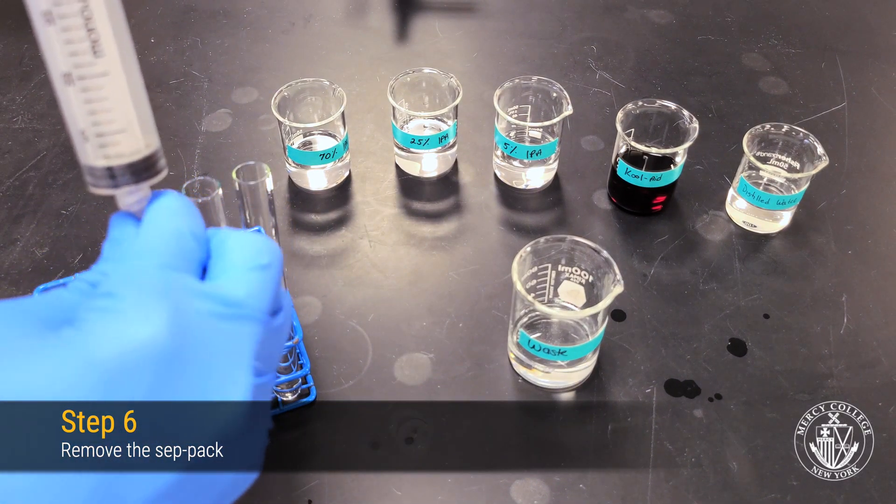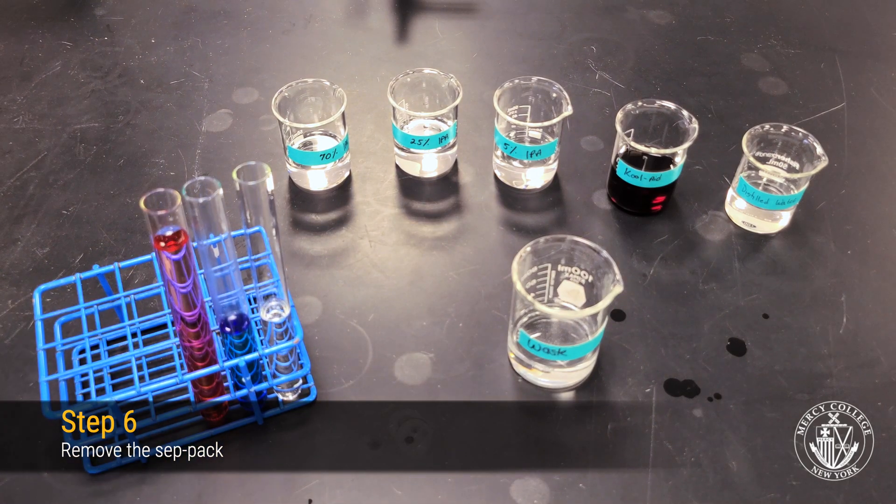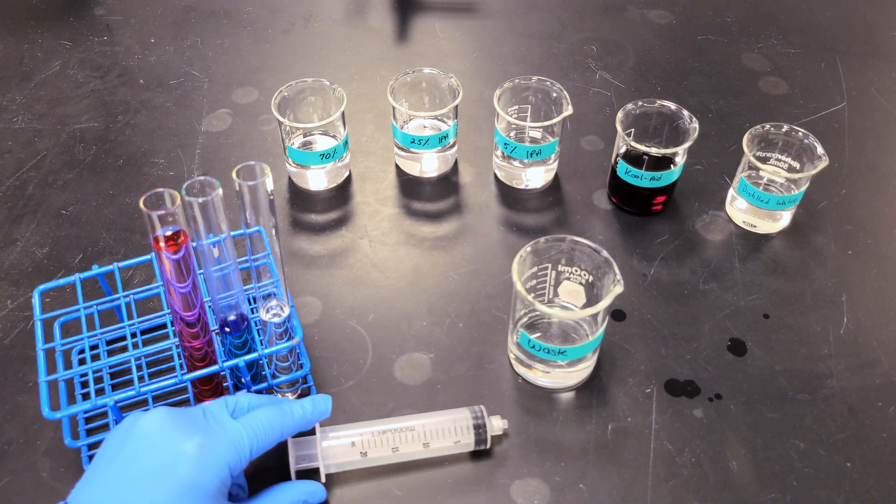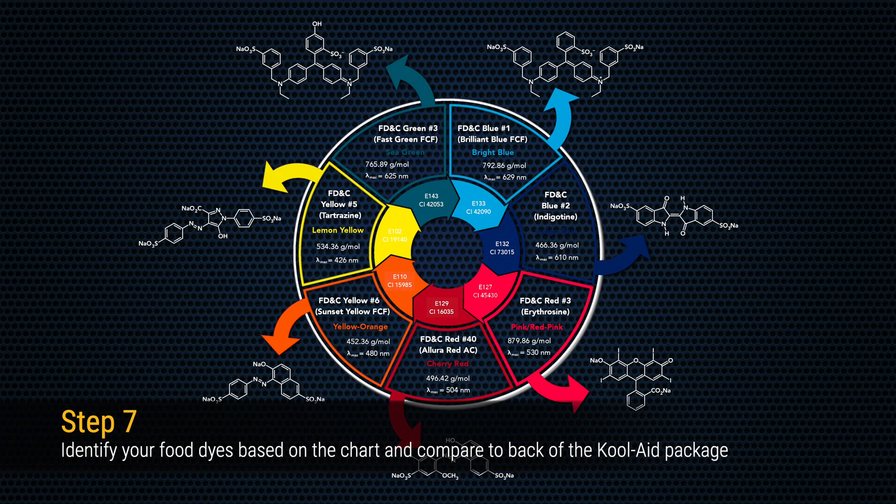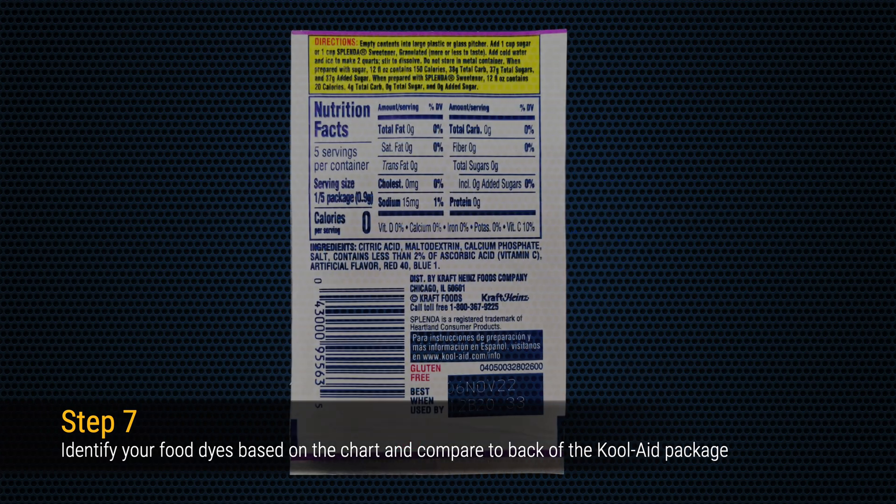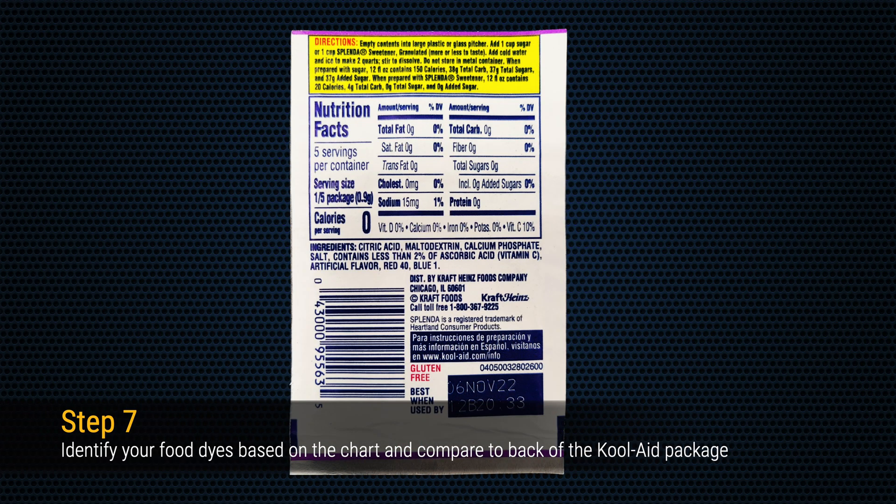Now remove the CEPPAC cartridge from your syringe and place all of your solutions into the provided waste container. A successful column chromatography experiment should yield two distinct colors. To identify the dyes present, compare to your food dyes chart and compare to the ingredients list on the back of the Kool-Aid packet.